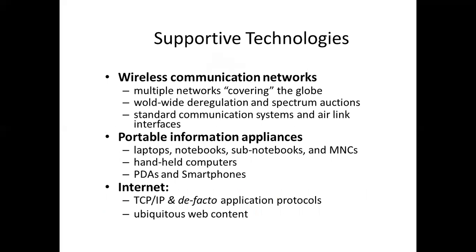There are other supportive technologies of interest in mobile computing. One is wireless communication networks — for one phone or device to connect with another without a physical link, we need wireless communication. We'll discuss multiple networks that provide global coverage so you can be connected anywhere in the world. We'll also discuss various worldwide spectrum options, regulations, standard communication systems, and air-link interfaces, as well as portable information appliances — laptops, notebooks, sub-notebooks.